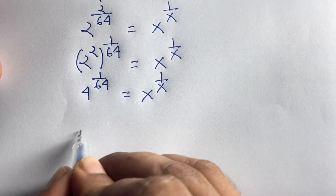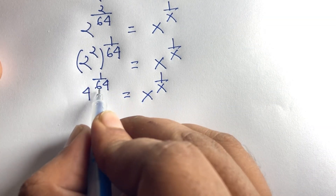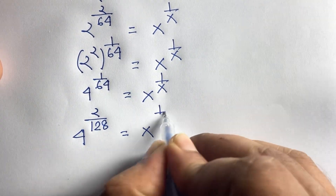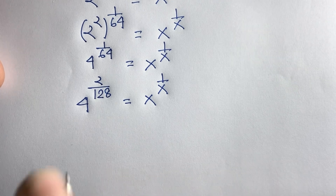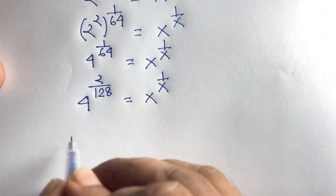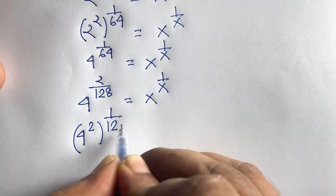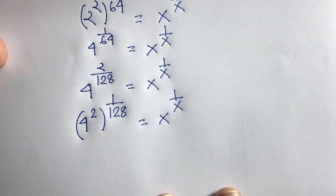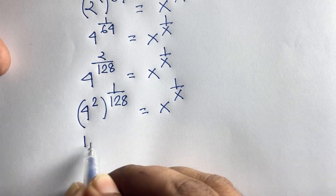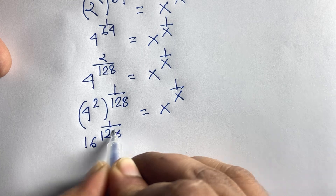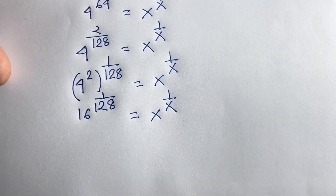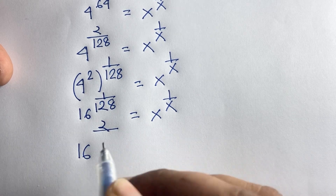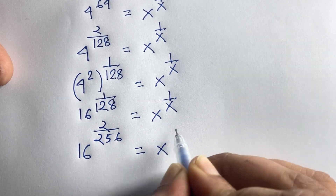Again I multiply this power by 2: 2 times 1 is 2, and 64 times 2 is 128. So 4 to the power 2 over 128, whole to the power 1 — which gives 4 to the power 2, whole to the power 1 over 128, is equal to x to the power 1 over x. Now 4 to the power 2 is 16, so 16 to the power 1 over 128. Multiplying again by 2: 2 times 1 is 2, 128 times 2 is 256. So 16 to the power 2 over 256 is equal to x to the power 1 over x.